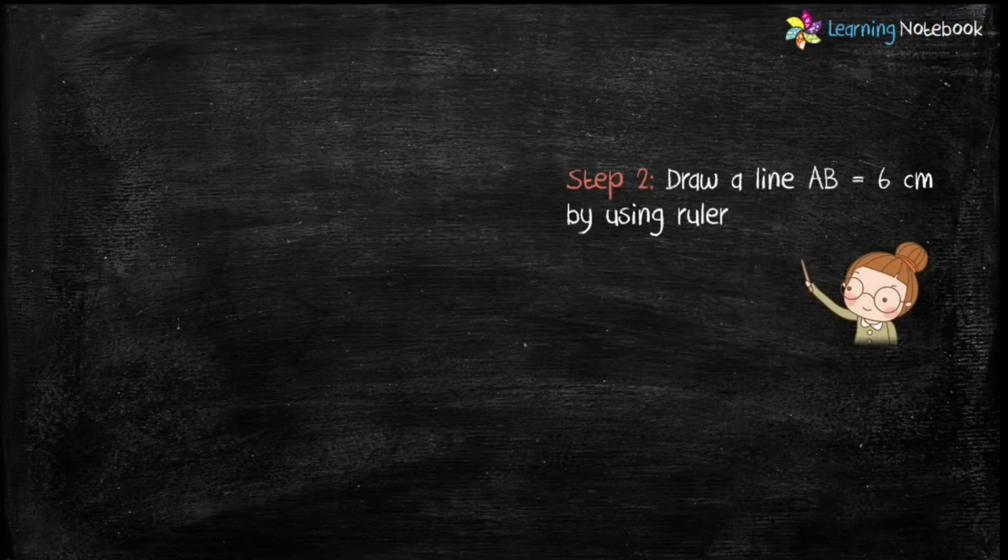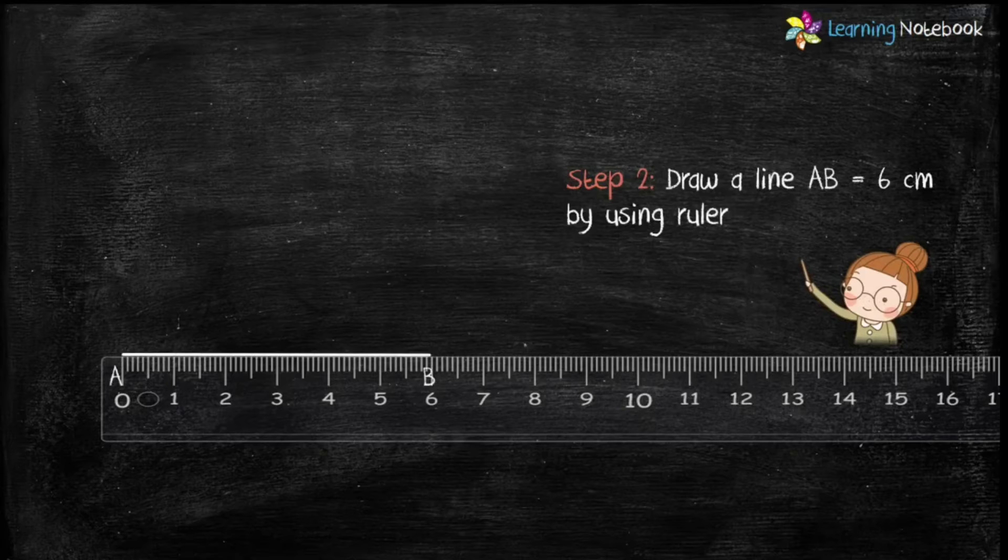In step 2, draw a line AB equals to 6 cm with the help of a ruler.